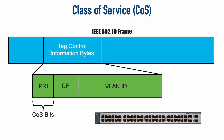Now, this COS marking is done over a .1Q trunk. What if we want to mark traffic coming from a PC that's not connected via a trunk? We can actually have this type of marking on a non-trunk connection using 802.1P. In order for that to work, our network interface card and the switch need to be configured for .1P support. With .1P, we're creating a frame that looks a lot like a .1Q frame — adding four bytes and using three of those bits for priority marking. The difference is the VLAN field: with .1P, we're not populating the VLAN field; it's all zeros.